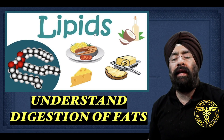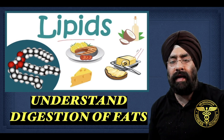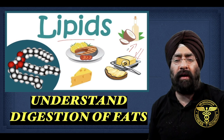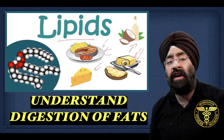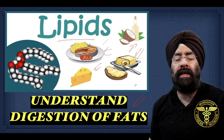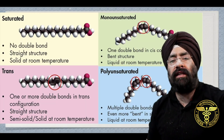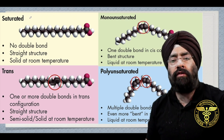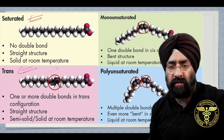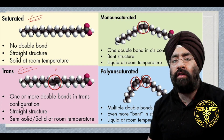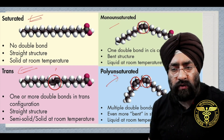Today we will talk about fats — cherby, lipids — which you eat: butter, oil, cheese, chicken, fish. There are 4 types of fats: saturated fats, trans fats, monounsaturated, and polyunsaturated.